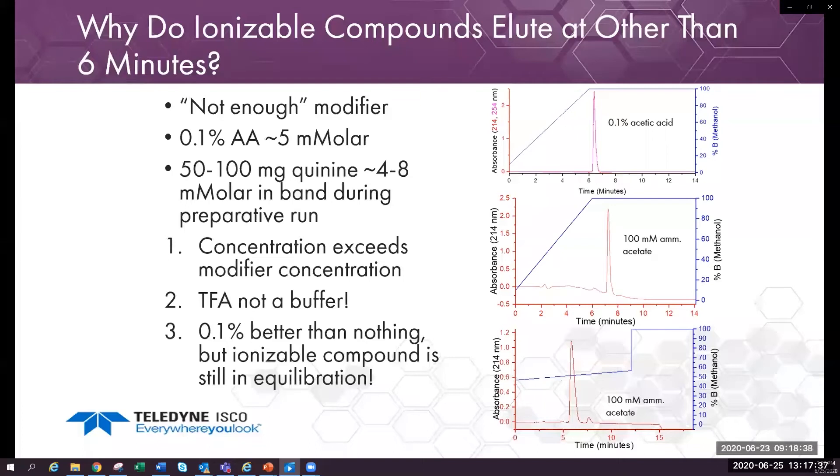50 to 100 milligrams quinine is 4 to 8 millimolar in the eluding band, while 0.1% acetic acid is around 5 millimolar, so there is more quinine than acid. 100 millimolar ammonium acetate pH for the retention is six minutes, the same as the calibrated retention time. This shows that proper pH control can cause ionizable compounds to elute at the expected time.